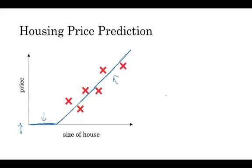So you can think of this function that you've just fit to housing prices as a very simple neural network. It's almost the simplest possible neural network. Let me draw it here. We have as the input to the neural network, the size of a house, which we'll call x. It goes into this node, this little circle, and then it outputs the price which we call y. So this little circle, which is a single neuron in a neural network, implements this function that we drew on the left.